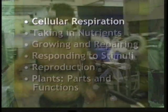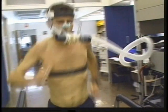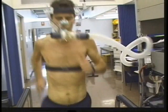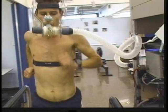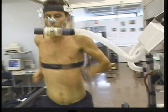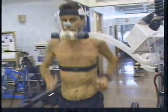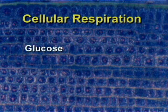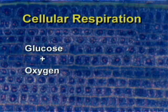When we hear the word respiration, we usually think about the animal, and specifically human, process of breathing and using oxygen. Cellular respiration, as you can guess from its name, takes place within cells. In a series of processes within each cell, food molecules, such as glucose, combine with oxygen.